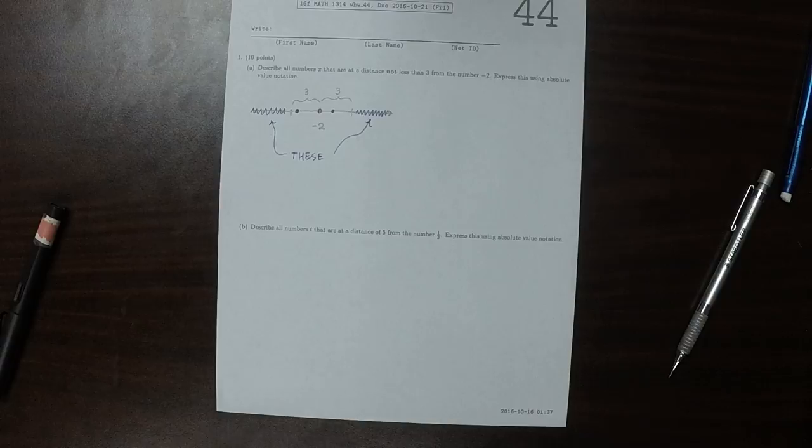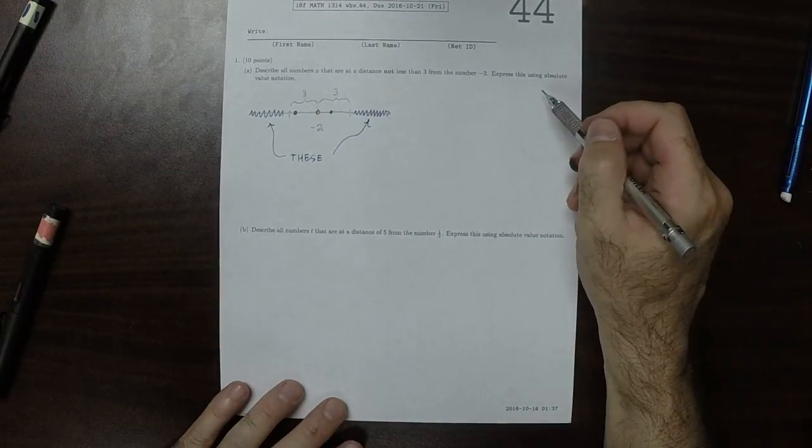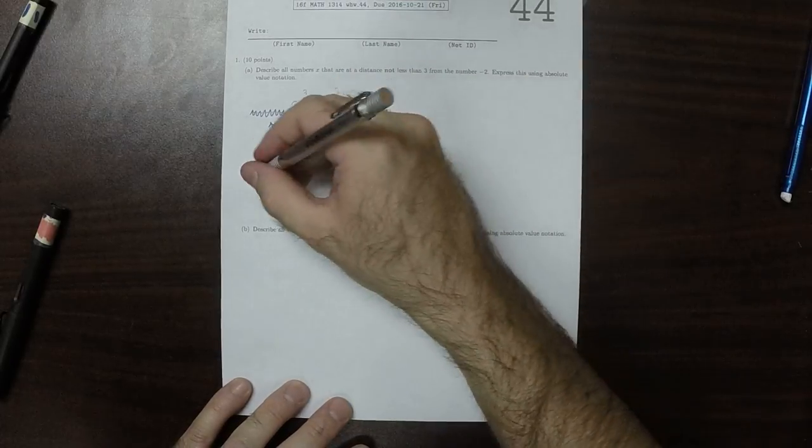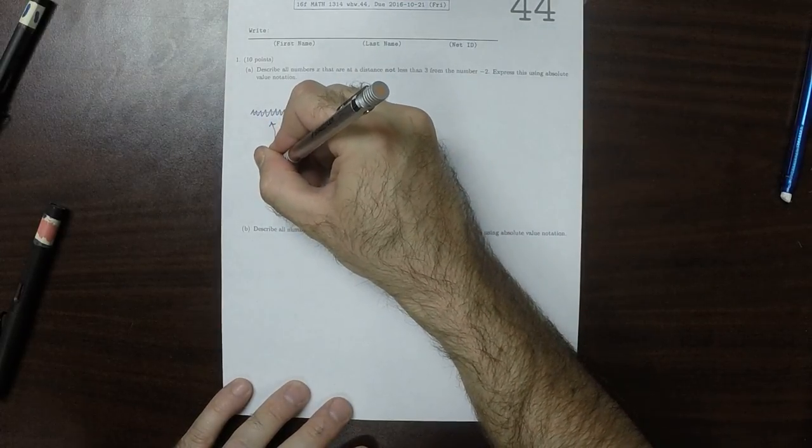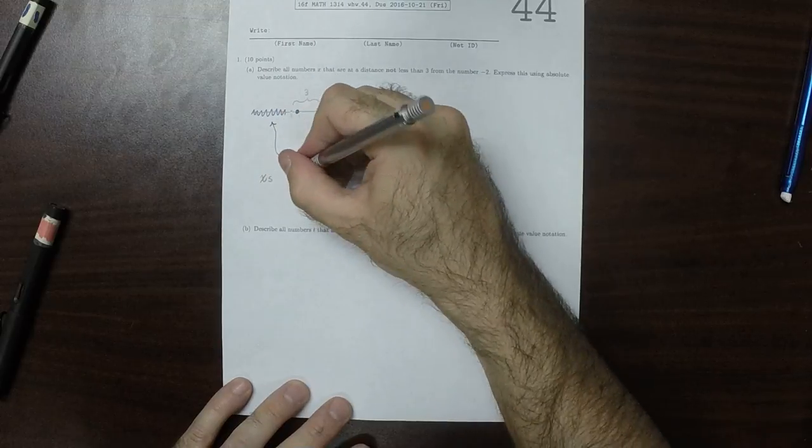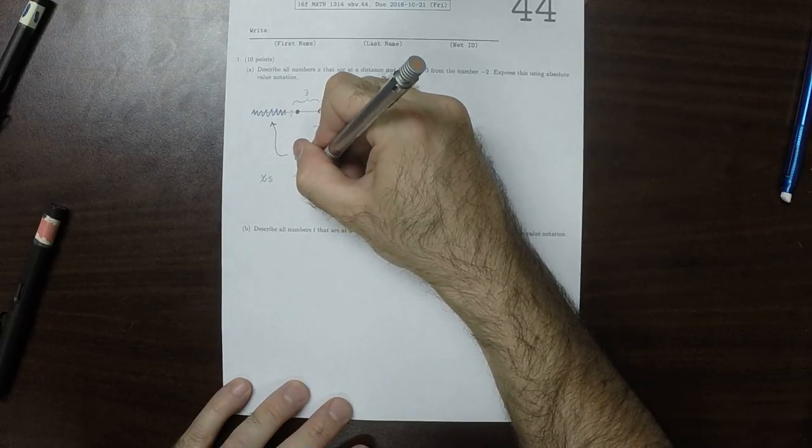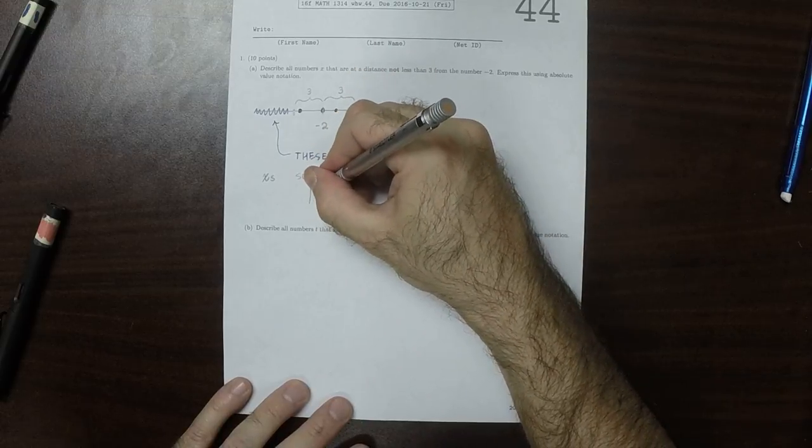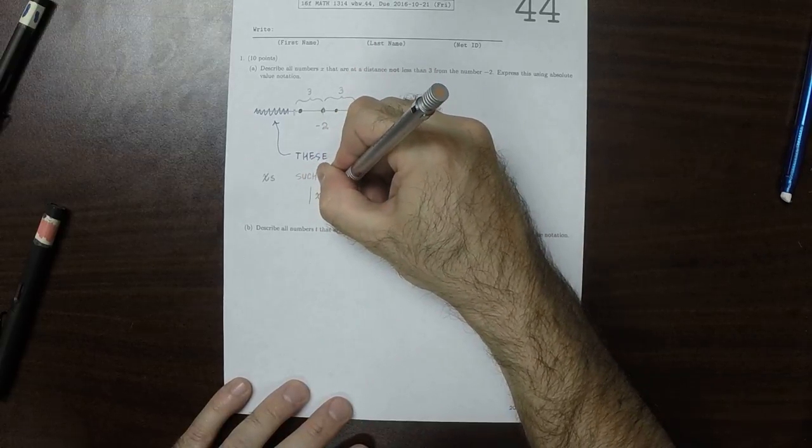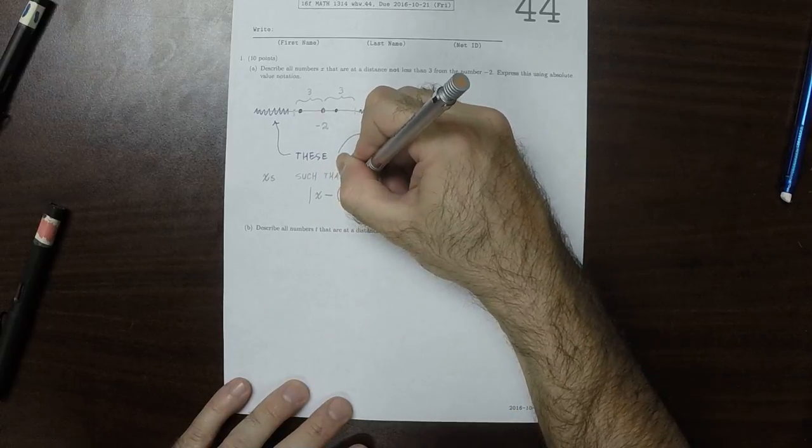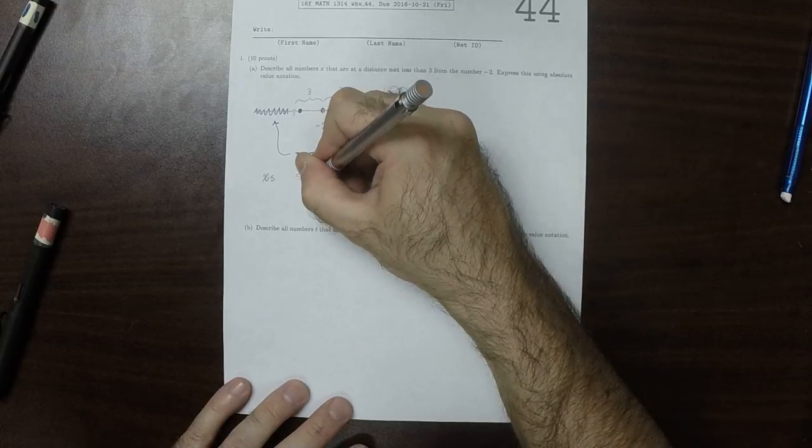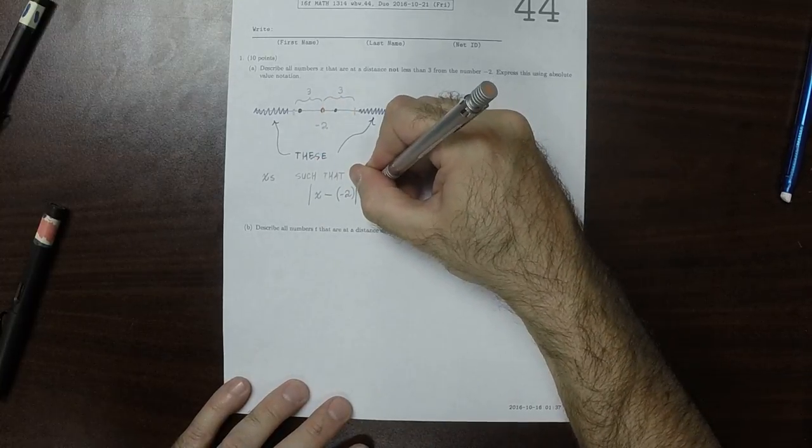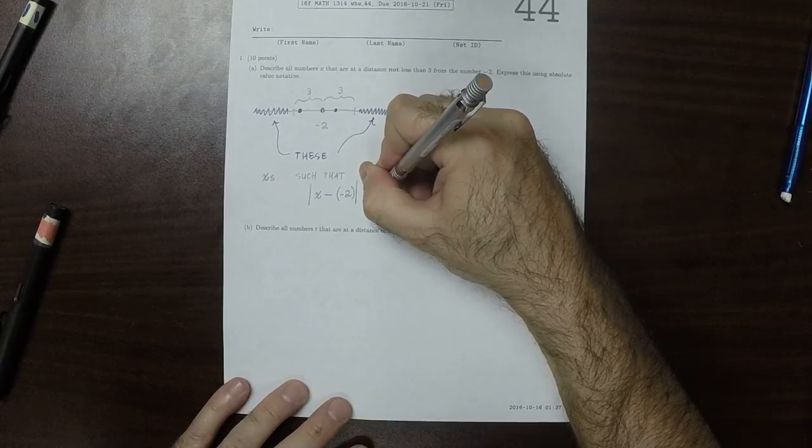And it says to give this answer in absolute value notation. So we want all of the x's such that the distance from x to negative 2 should be greater than 3.